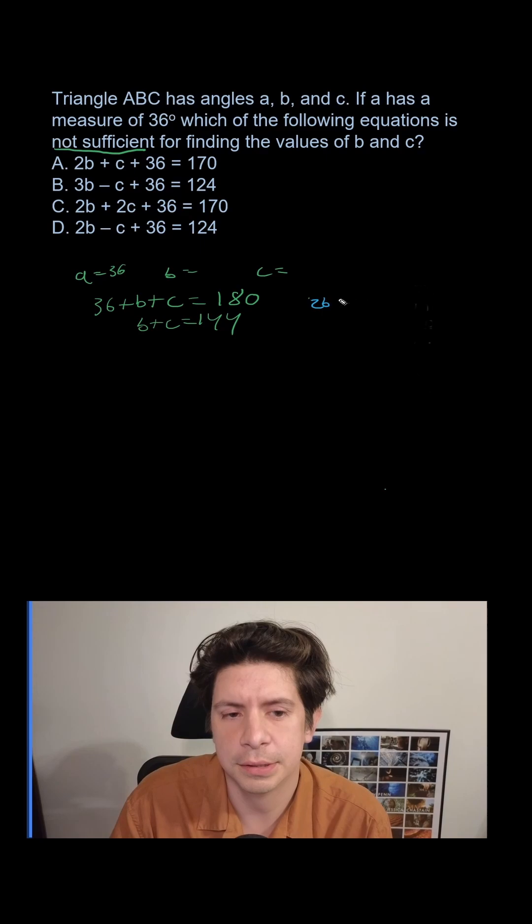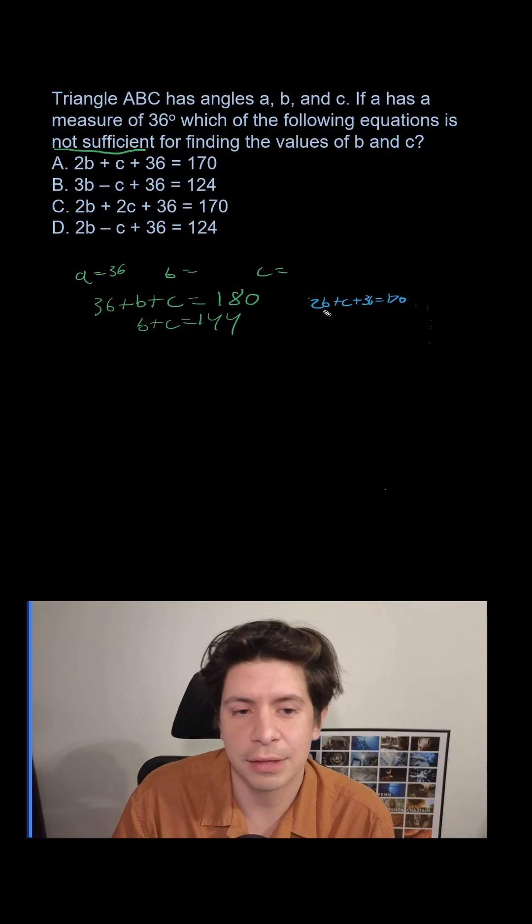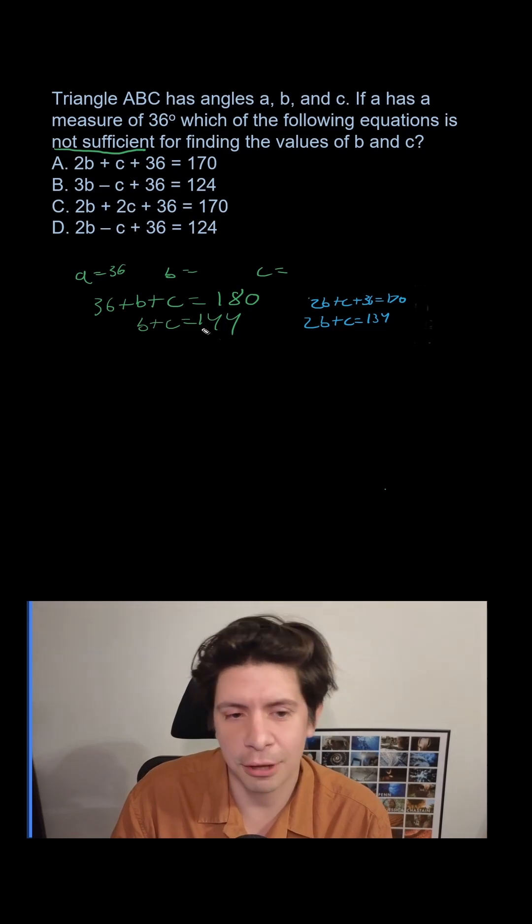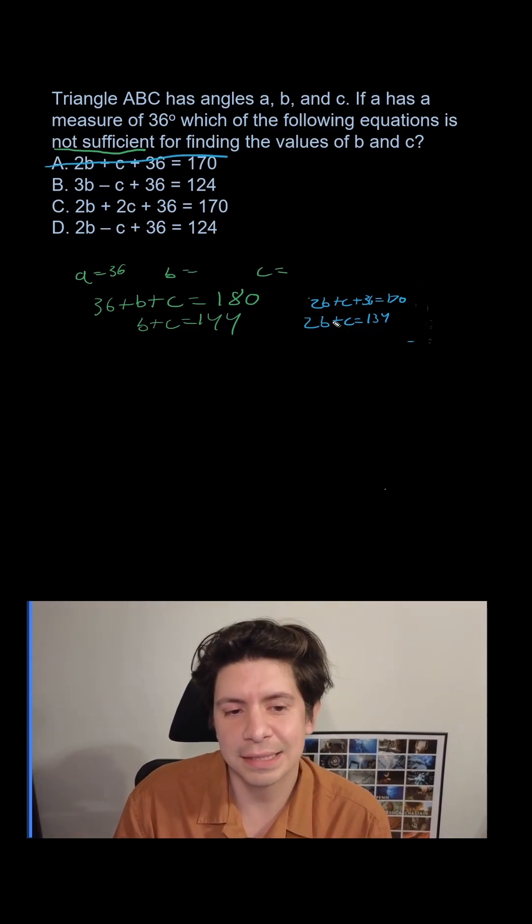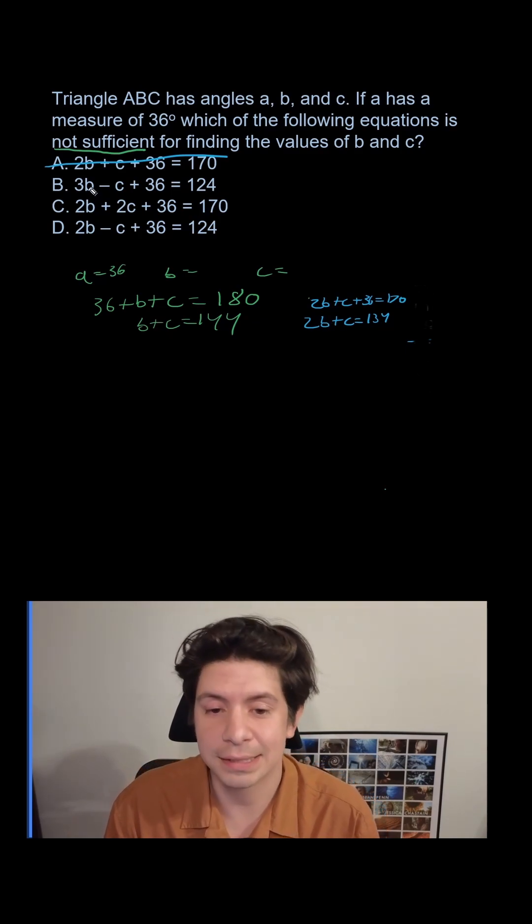So if we did A, 2B plus C plus 36 equals 170, then we subtract 36, and we're going to get 2B plus C equals 134. And with that we could solve using systems of equations, we're totally fine. So it's not going to be A because we have them be unbalanced. They're not just B and C.